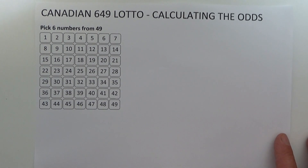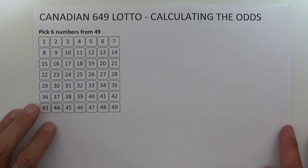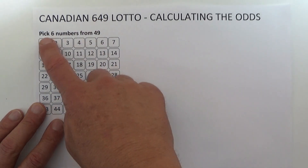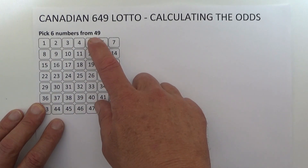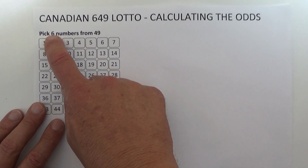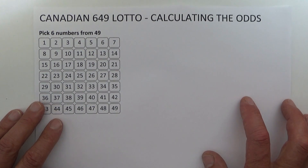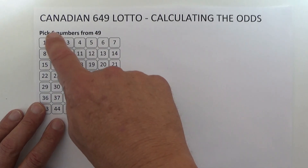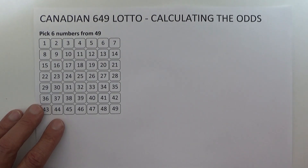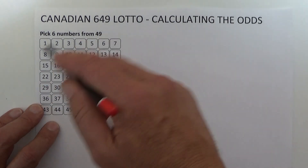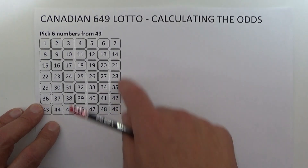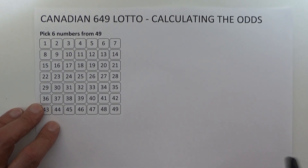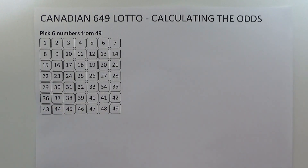Today I'd like to show you how to calculate the odds of winning Canadian 649 Lotto. It's called 649 Lotto because you've got to pick six numbers from 49, and to win you've got to match all six numbers to the six numbers that are drawn. I've made a template coupon and I'm going to mark off six numbers on it to help you understand how the odds are calculated.